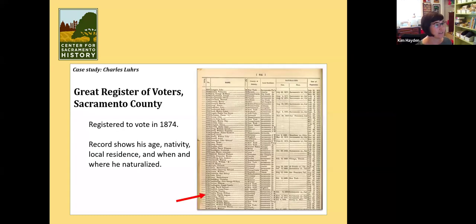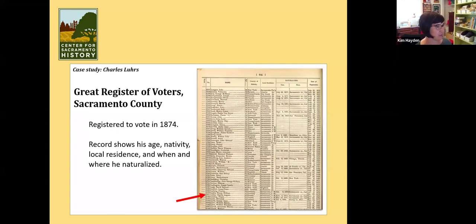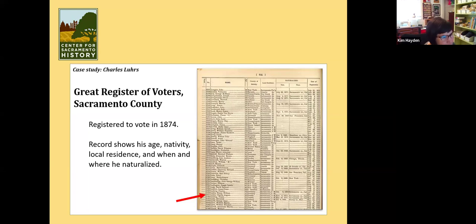Moving on, here is the register of voters. It has his full name, Charles August Lurs, says where he came from — Prussia — where he lives, when he naturalized, where he naturalized, and the date of his registration. You get a lot of information from this one little thing that can help you go to other places to find more information.